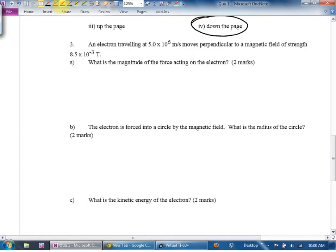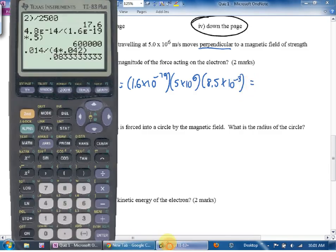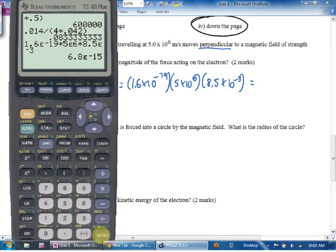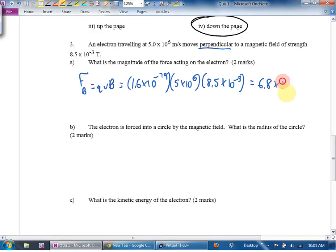An electron traveling at 5 times 10 to the sixth meters per second moves perpendicular to a magnetic field. What's the magnitude of the force? The force is just qvB, it's equal to q electron 1.6 times 10 to the negative 19, v is 5 times 10 to the sixth, B is 8.5 times 10 to the negative 3. So 1.6 times 10 to the negative 19 times 5 times 10 to the sixth times 8.5 times 10 to the negative 3. 6.8 times 10 to the negative 15 newtons.